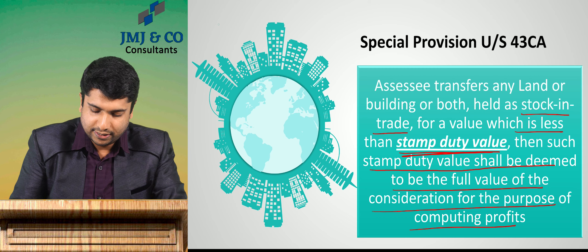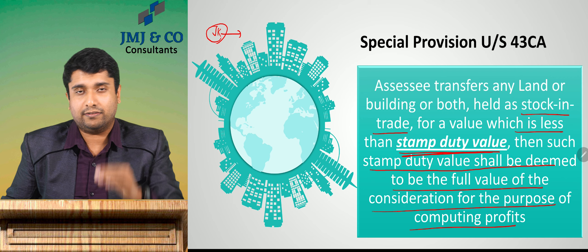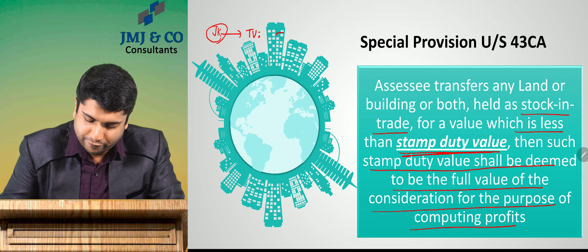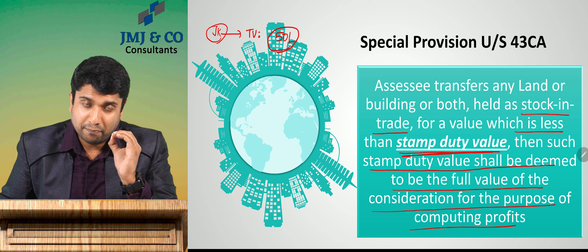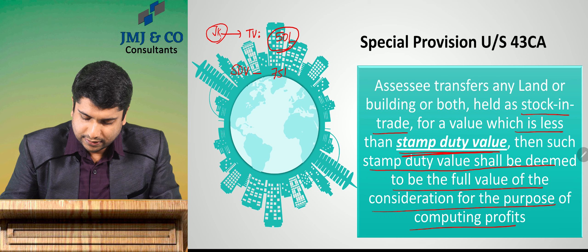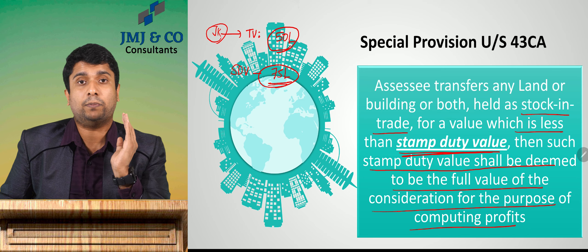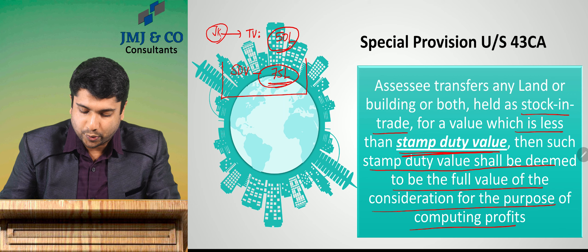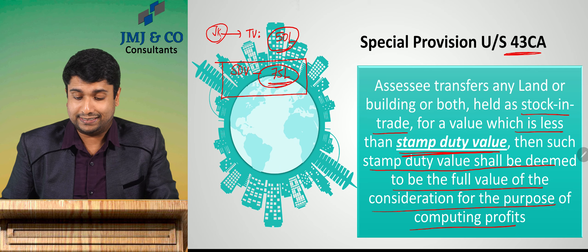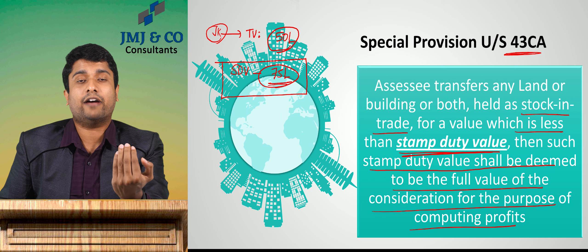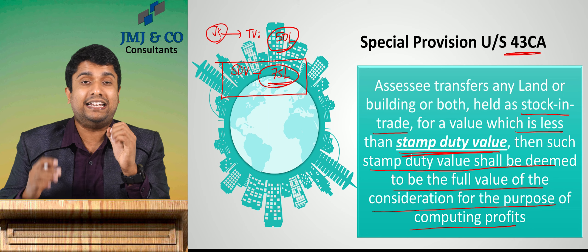For example, say JK is a developer of flats and transfers a flat for ₹50 lakhs, but the stamp duty value for that property is ₹75 lakhs. Then, for the purpose of computing profit and paying taxes, you have to consider the stamp duty value of ₹75 lakhs as your transfer value under Section 43CA. This is applicable only for dealers dealing in land or a building or both.